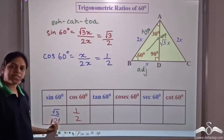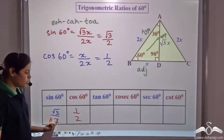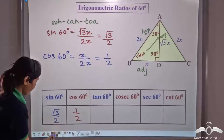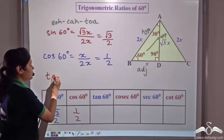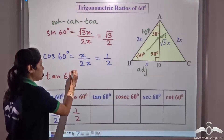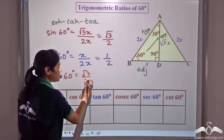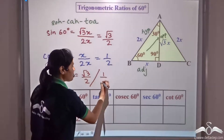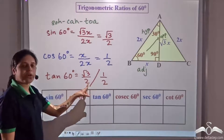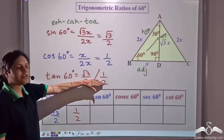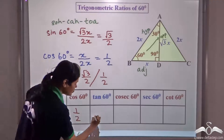Tan 60 = sin 60 / cos 60 = (√3/2) ÷ (1/2). The 2s cancel, leaving tan 60 = √3.